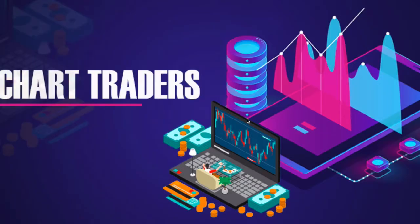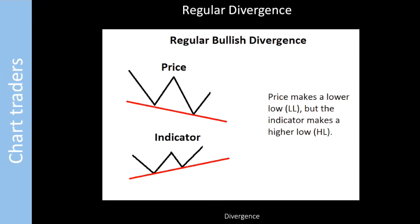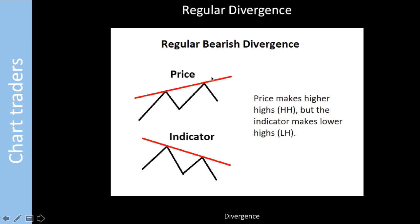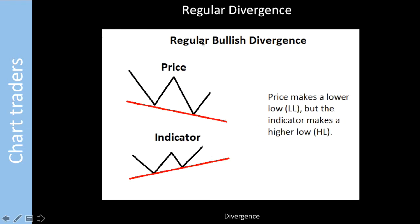Welcome to Chart Traders. In the last video we discussed about divergence and types of divergence. In this video we will talk about RSI regular divergence. As we know, there are two types of divergence: one is bullish divergence and the second is bearish divergence. First we will see the regular bullish divergence, then identify both regular bullish and regular bearish divergence on a chart.